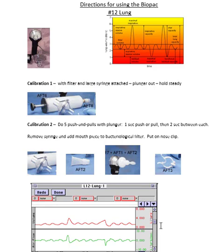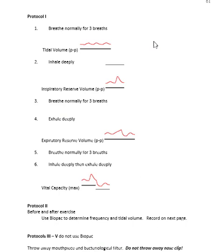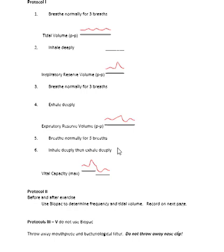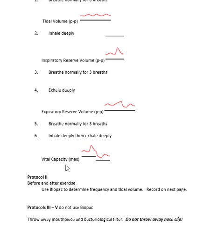We have five sets of experiments using the BioPac. For those who can't come to lab, we have pictures and videos of other lab professors doing the BioPac. For the first experiment, breathe normally for three breaths to get your tidal volume, then inhale as deeply as you can to get your inspiratory reserve volume, then exhale deeply to get your expiratory reserve volume, then inhale deeply and exhale fully to get your vital capacity.